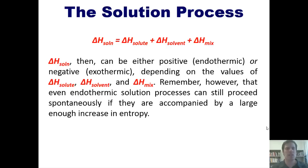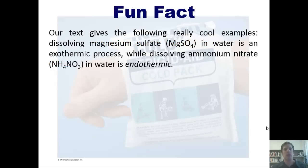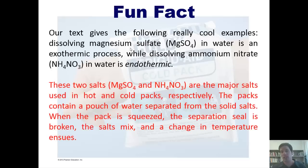I'd now like to end by sharing some cool examples from our book. In our book, it mentions that magnesium sulfate when it's dissolved in water is an exothermic process. I should know because I've done it tons and it totally gives off heat. In contrast, dissolving ammonium nitrate in water is endothermic. These two salts then, magnesium sulfate and ammonium nitrate, are the major salts used in hot and cold packs respectively. The packs contain a pouch of water in one section, separated from the solid salts in another. When you squeeze the pouch, it breaks the seal between the two, the two mix, and then the temperature change ensues.